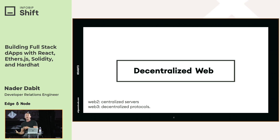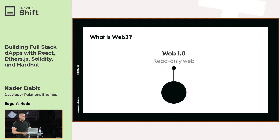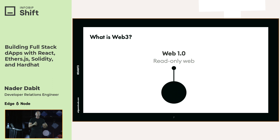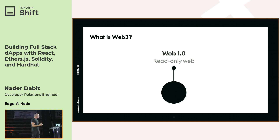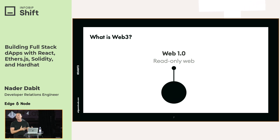Most commonly, people throw around the term Web3 when they're talking about the decentralized web. I want to walk through why this term even exists. When we created the Internet, it was built in a way that's a lot different than it is today. People are commonly categorizing the evolution of the web in three separate categories: Web1, Web2, and Web3.